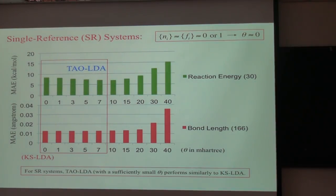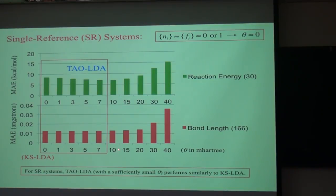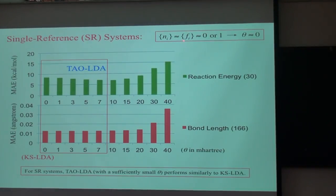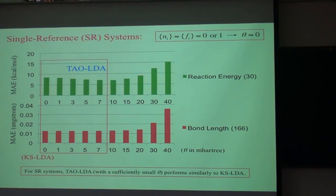For single-reference systems, natural orbital occupation numbers are close to either zero or one, implying that the effective temperature C_dot should be very small. As you can see, for a single-reference system, tau LDA with a sufficiently small C_dot performs similarly to constrained LDA. When you increase C_dot, the result will have large error, because for a single-reference system the effective temperature should be small to correctly simulate the natural orbital occupation numbers.